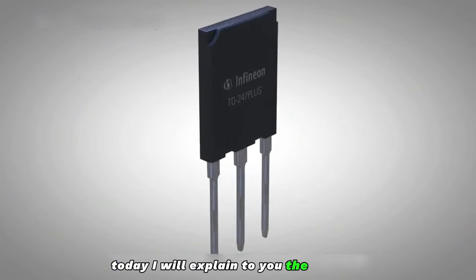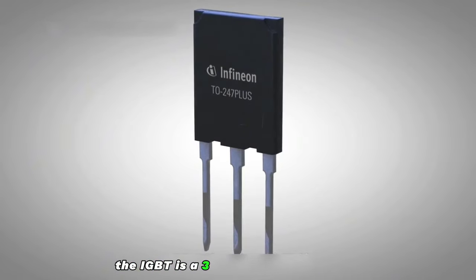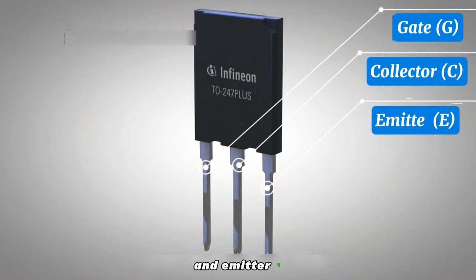Today, I will explain to you the working principle of IGBT. The IGBT is a three-terminal device: gate G, collector C, and emitter E.